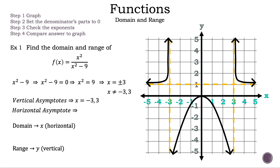Now let's find the horizontal asymptote. We need to look at the powers in the numerator and the denominator. We have the same — both are two. We have a horizontal asymptote at y equal to the leading coefficient of the numerator, which is one, divided by the leading coefficient of the denominator, which is also one. And one divided by one is one. So the horizontal asymptote is y equals one.